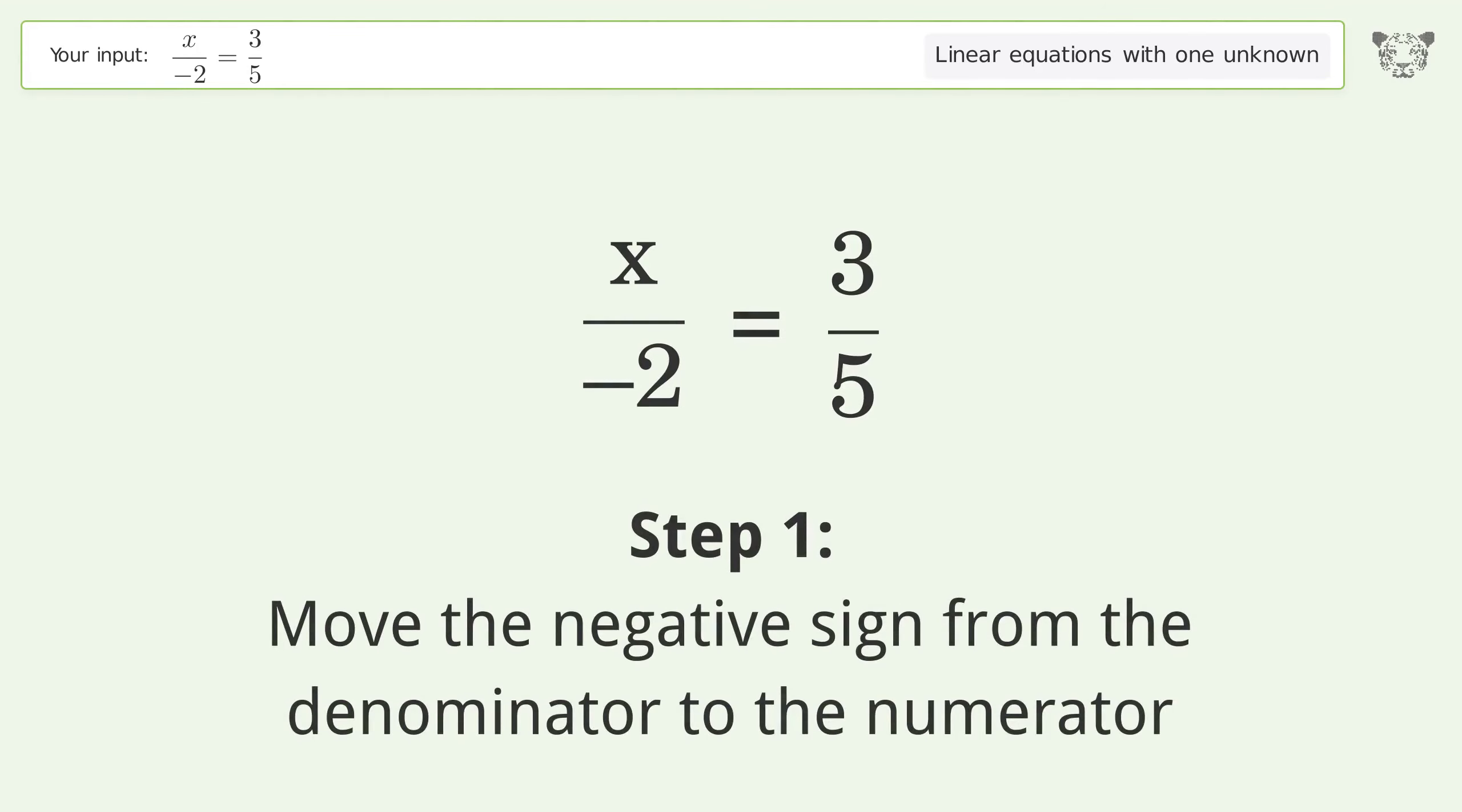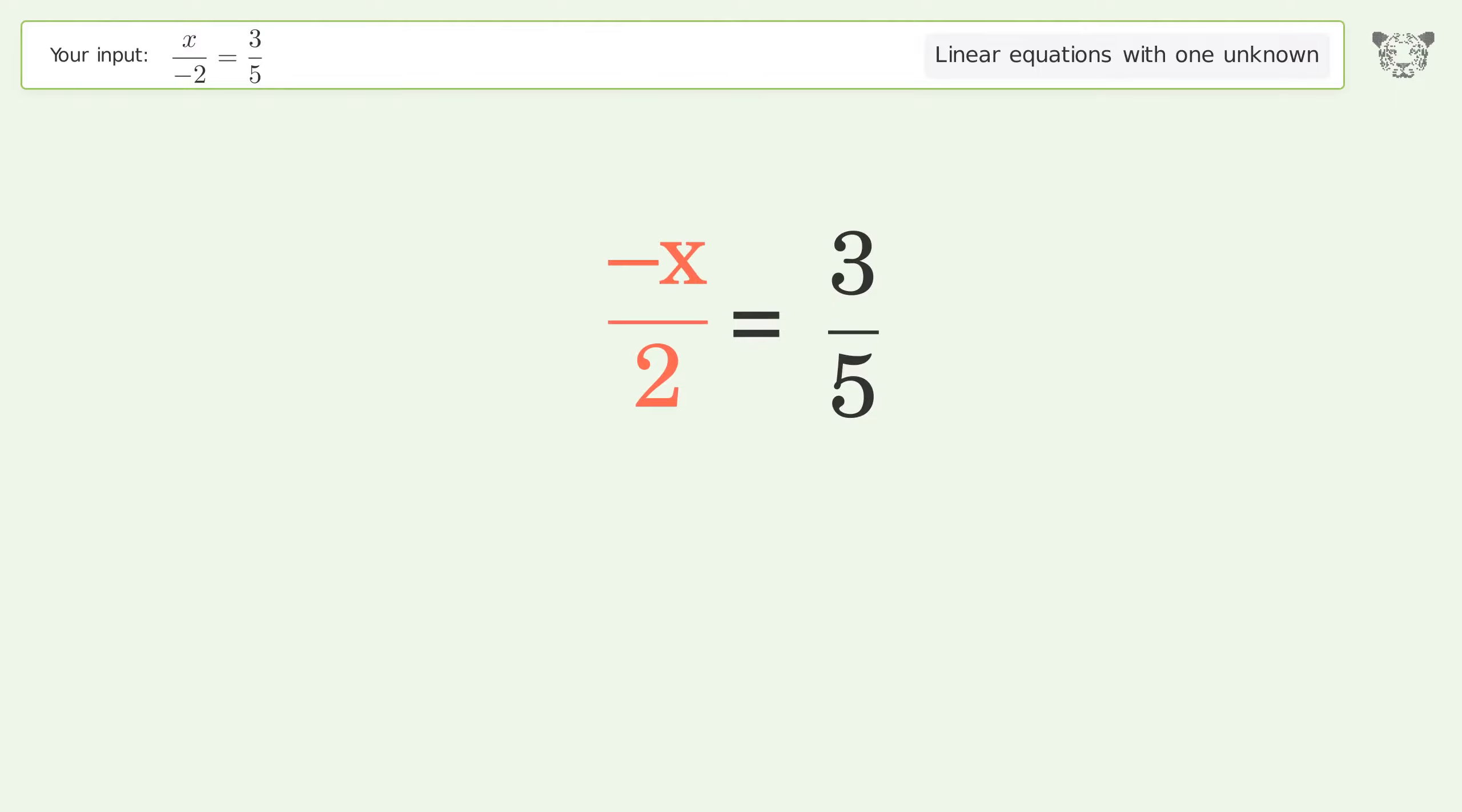Move the negative sign from the denominator to the numerator. Isolate the x. Multiply both sides by 2.